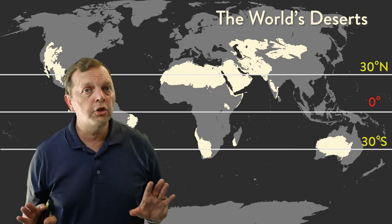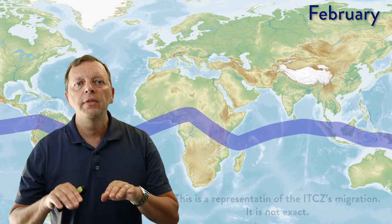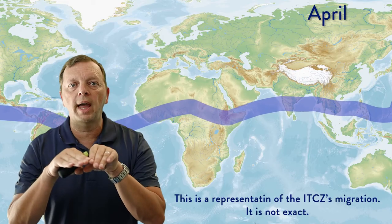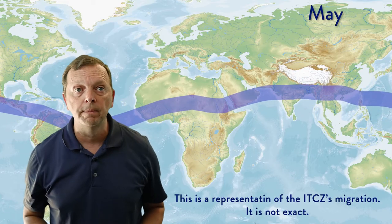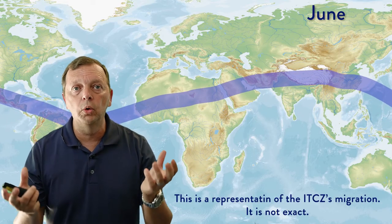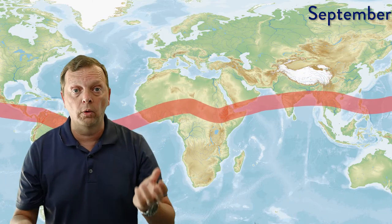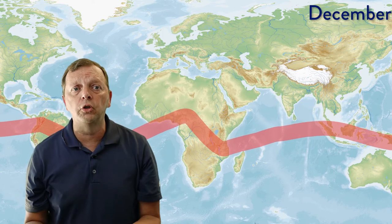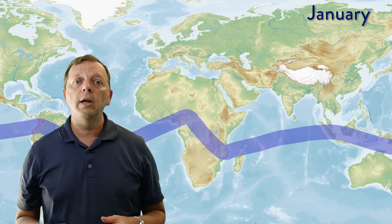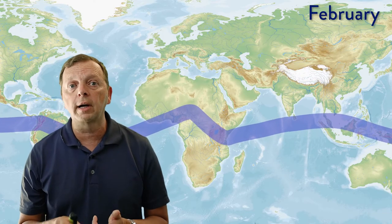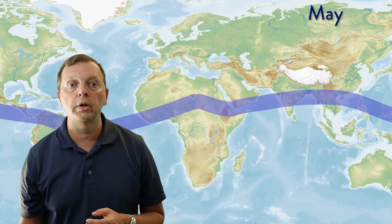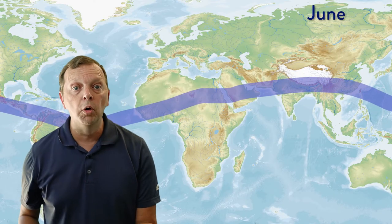While the ITCZ is found in the tropics, as the seasons change, the ITCZ will actually migrate north and south, moving towards the hemisphere that has the most heat during that season. But because oceans and lands heat and cool at different rates, the ITCZ will not move uniformly around the world. In south and east Asia, the ITCZ will move as much as 40 degrees of latitude between winter and summer. Over the South American and African continents, the ITCZ will actually move more in the eastern portion of the continents than in the west.